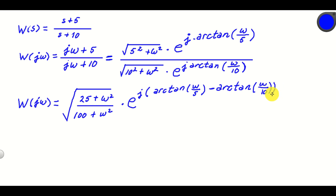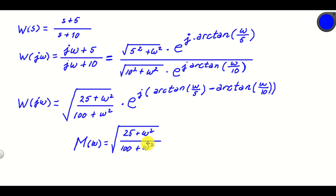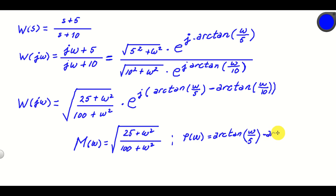From here we can see that the magnitude function is the square root of (25 plus omega squared) divided by (100 plus omega squared), and the phase function is arctan(omega over 5) minus arctan(omega over 10). That solves our problem — we have computed the magnitude and phase functions.